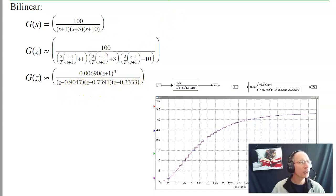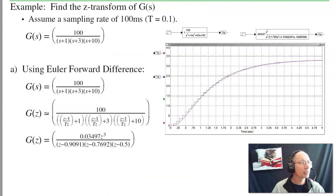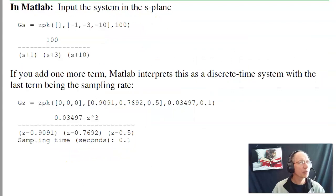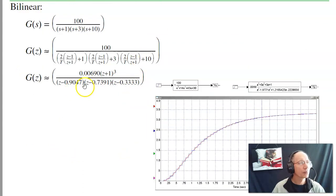Again, comparing 0.90, 0.73 to 0.90, 0.76, and 0.5 becomes 0.3. So there's a little bit of difference there. The zeros are quite different. Instead of putting three zeros at the origin, I put three zeros at -1. If I look at the step response, it's much better. Again, bilinear is a much better approximation than Euler. A little more complicated, though.